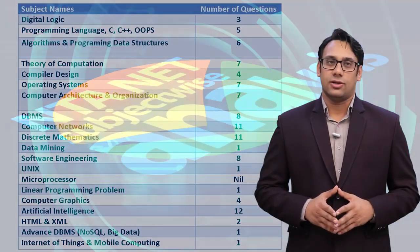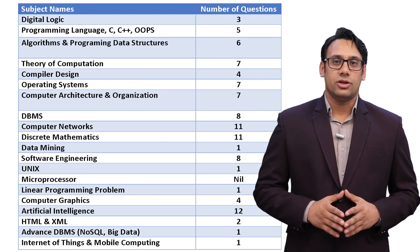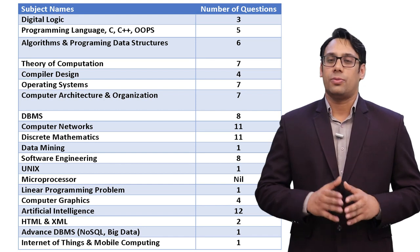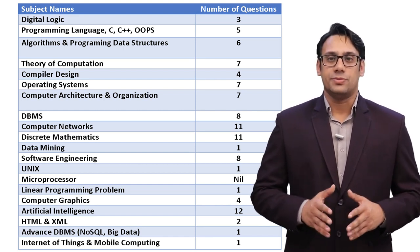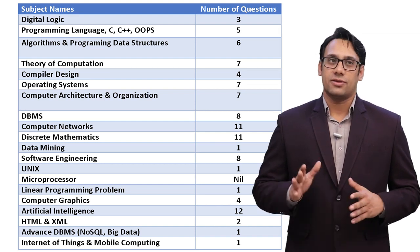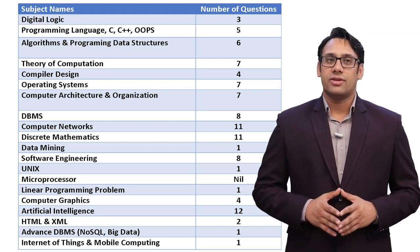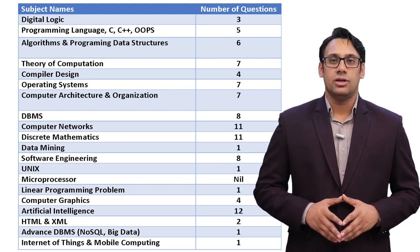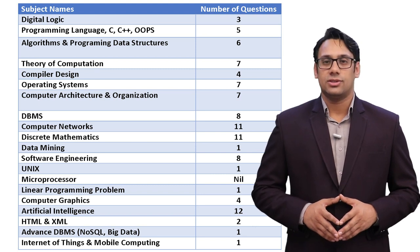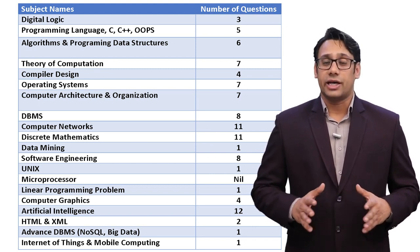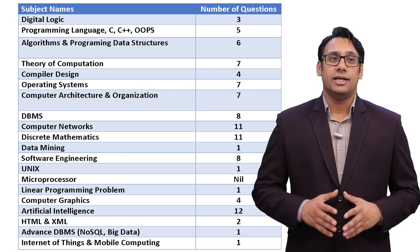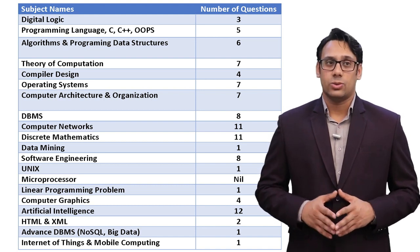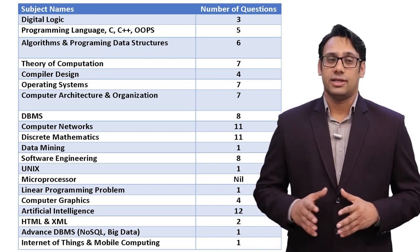Let us go subject-wise. The first subject is digital logic — in June 2019 they asked only 3 questions. Second is programming methodology — C, C++, and object-oriented programming — from all these they asked 5 questions. From data structures and algorithms they asked 6 questions. Theory of computation: 7 questions. Compiler design: 4 questions. Operating system: 7 questions. Computer architecture and organization: 7 questions.